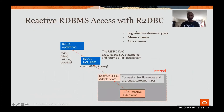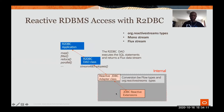R2DBC also uses org.reactivestreams types. Similar to Reactor, it has a Mono stream of zero or one element, and Flux stream of multiple elements. We have the JDBC extension and an adapter class — but the difference with what I showed before is that in the driver we already incorporate the adapter class. So when you get the R2DBC driver, it already has the adapter class to do the conversion. All you have to do is build your R2DBC DAO class to execute the SQL statement and return the Flux data stream, then build the application on top of the stream.